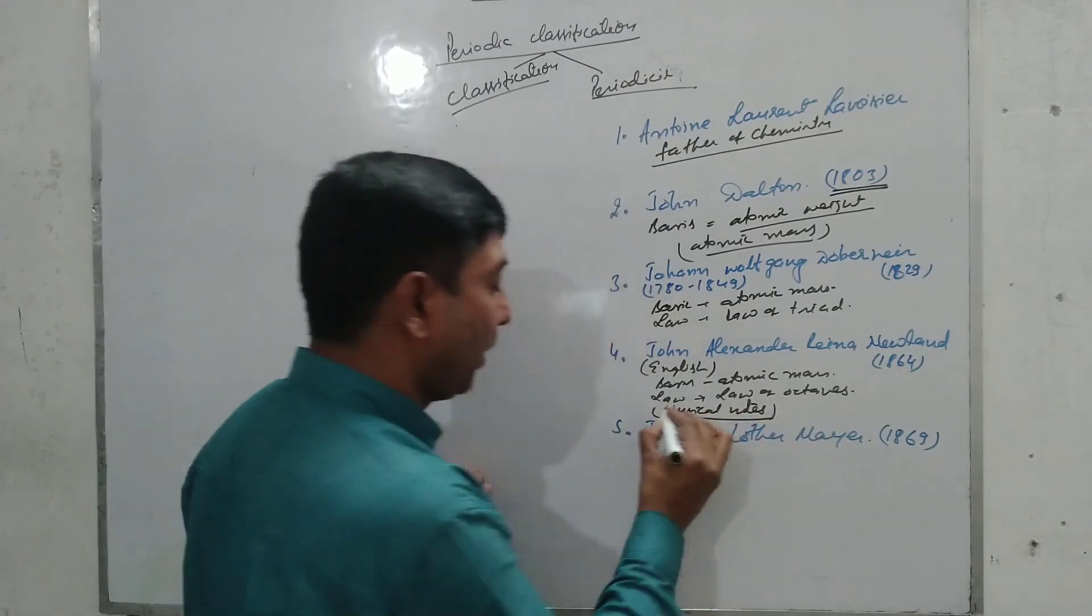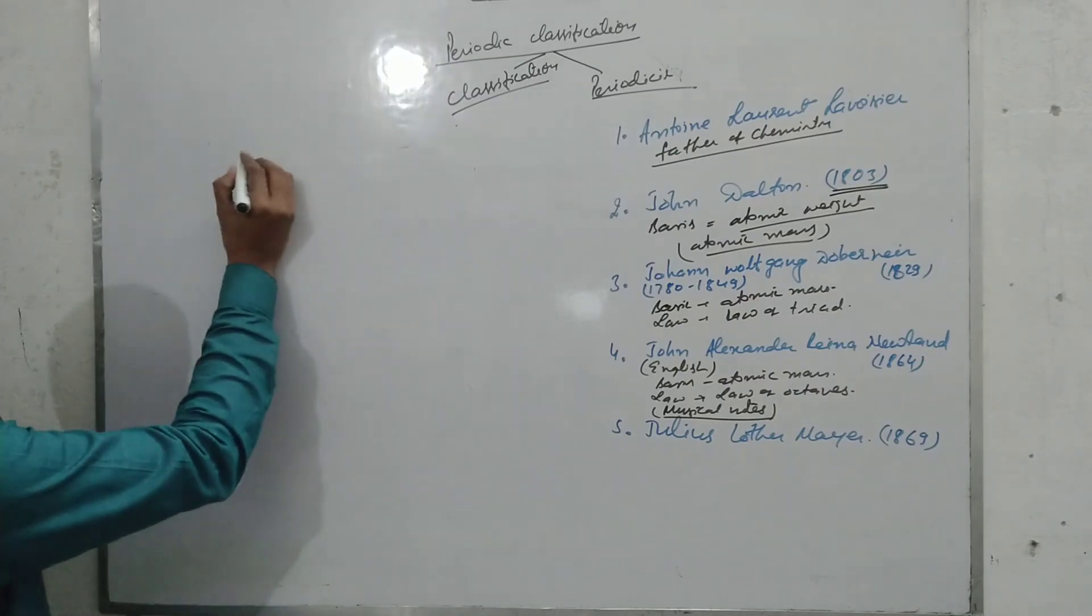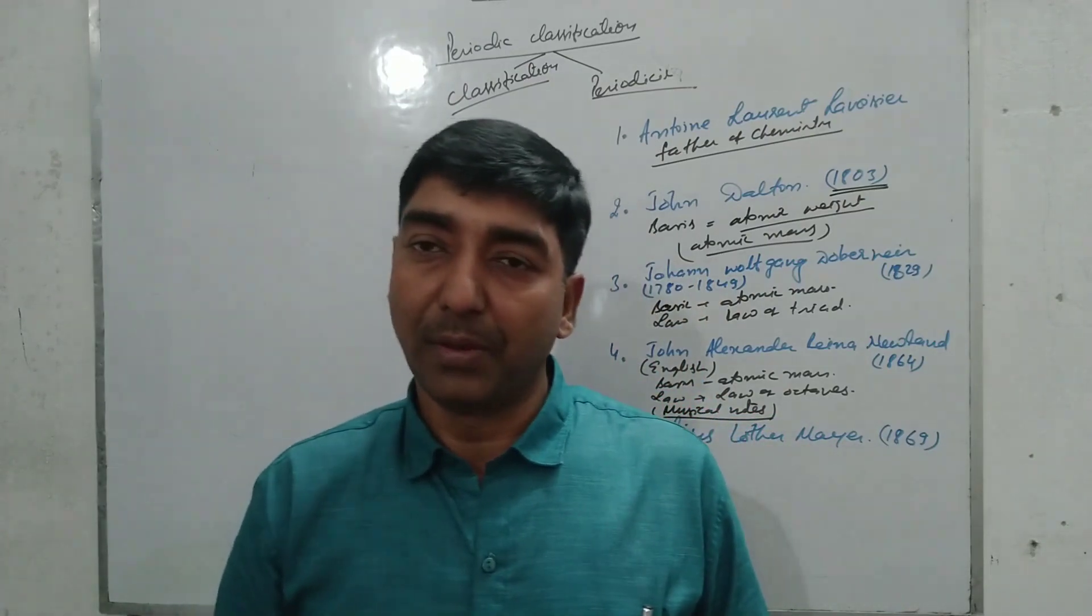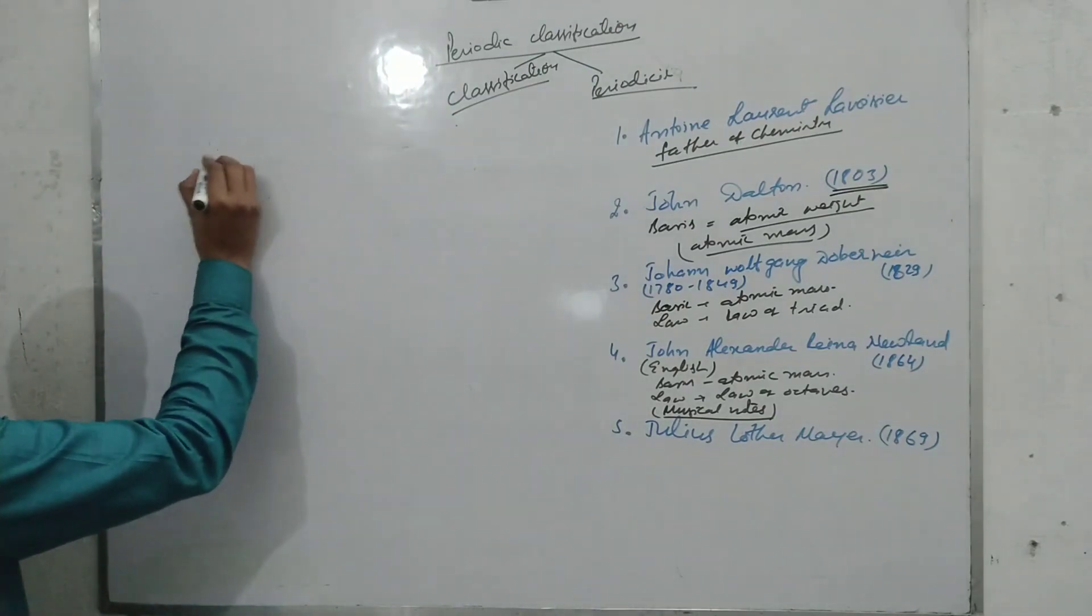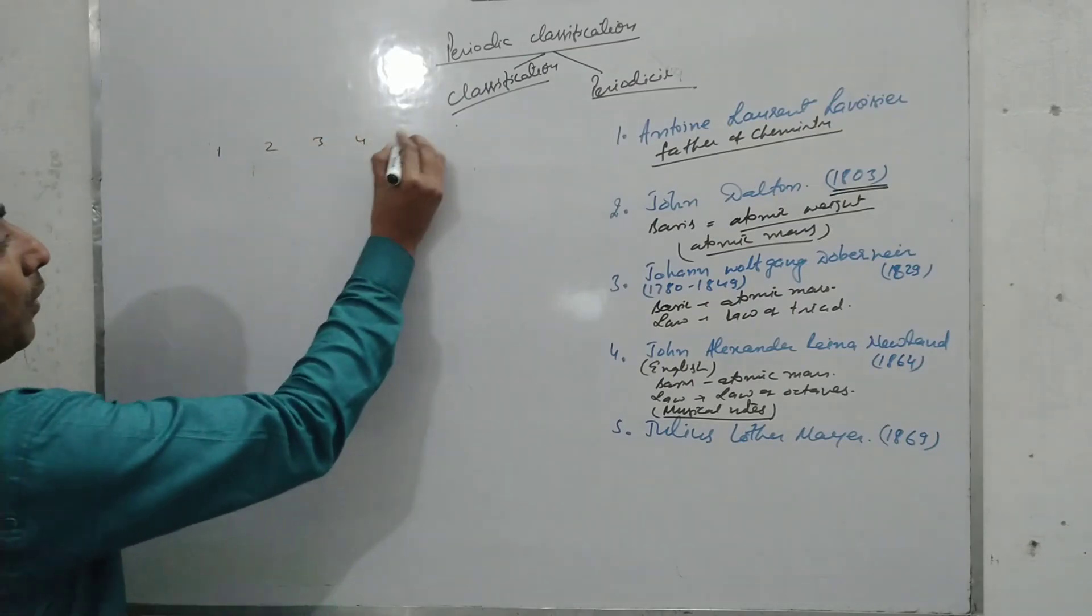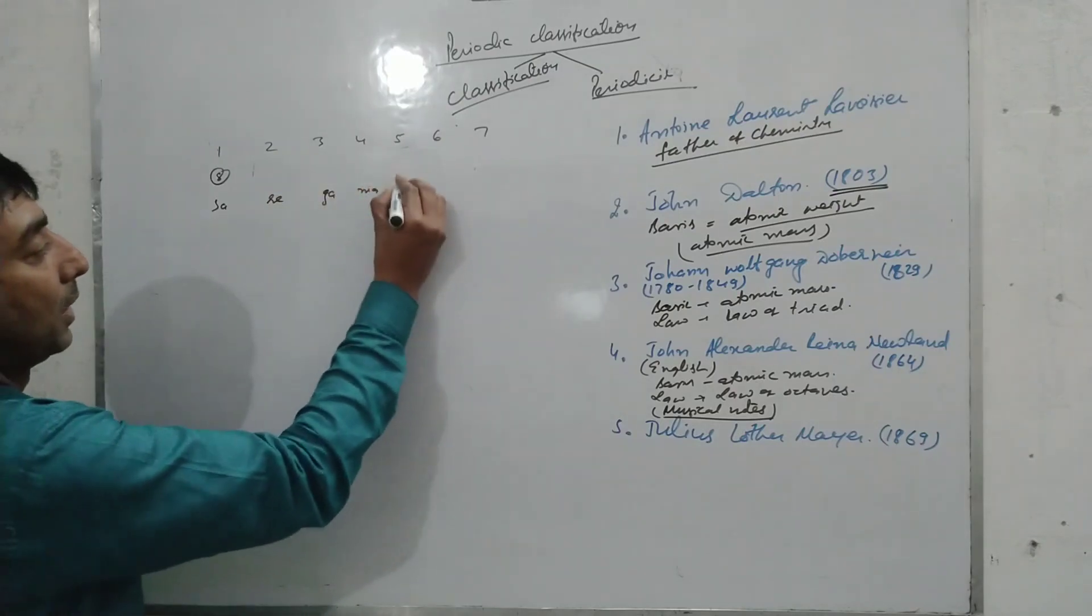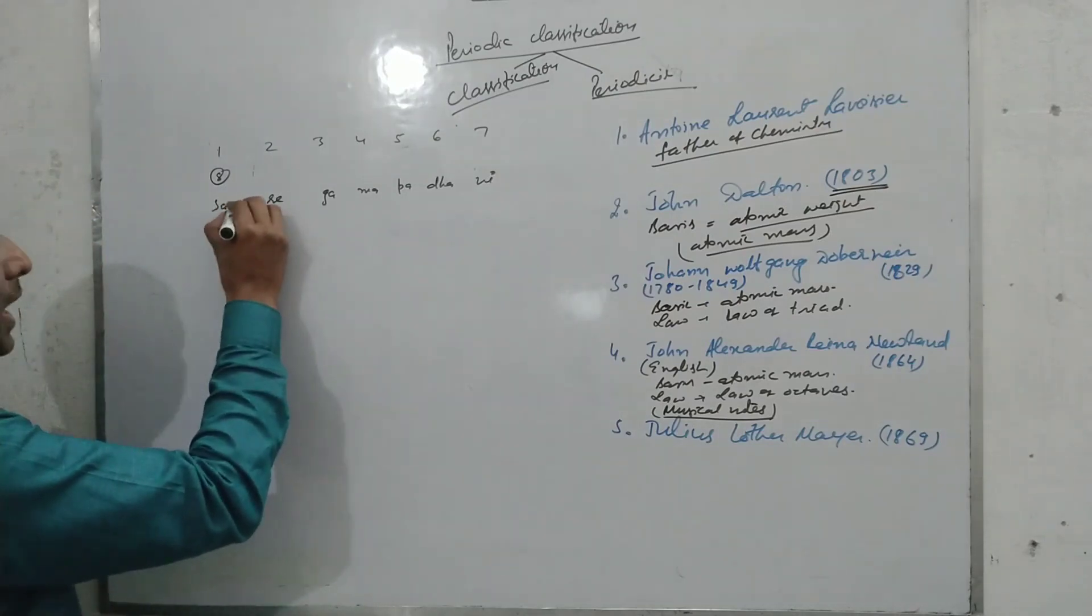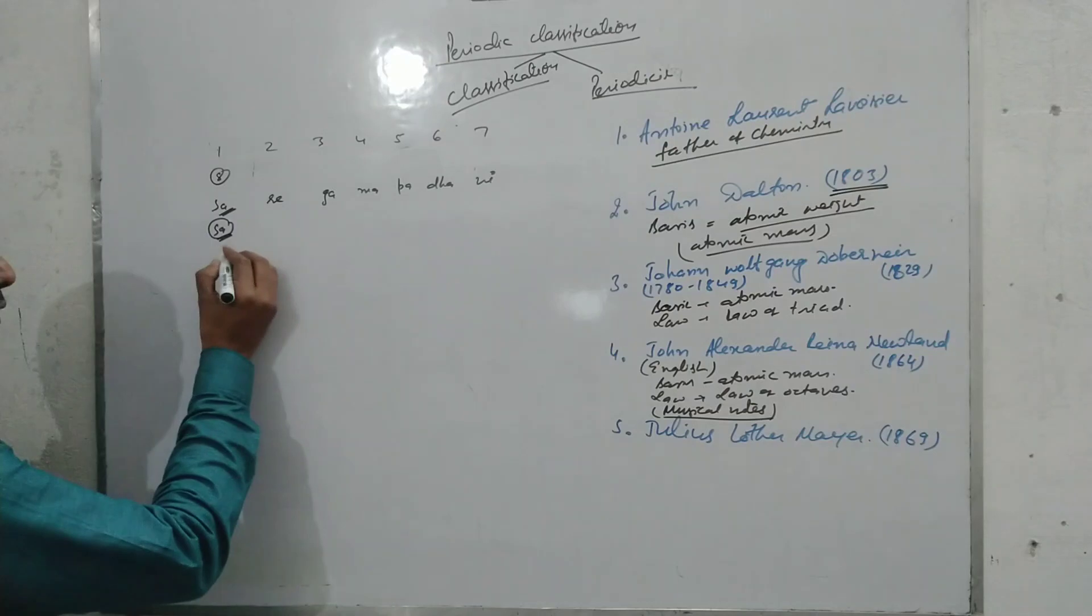According to him, his classification was very similar to that of musical notes. According to this law, every eighth element shows the properties of the first element, like the musical notes. His arrangement was 1, 2, 3, 4, 5, 6, 7, and 8 according to the Indian music: sa re ga ma pa dha ni sa.